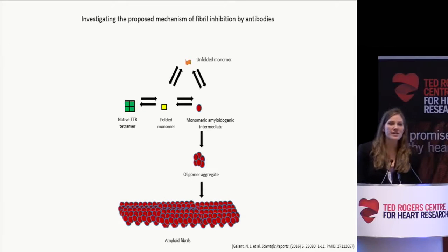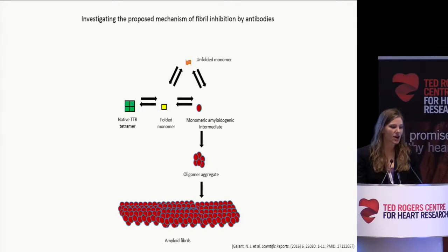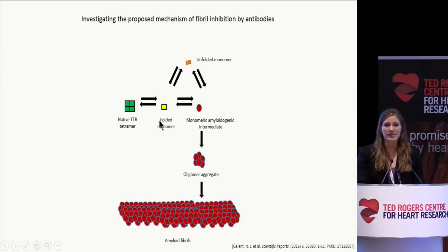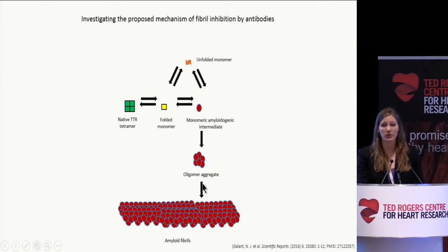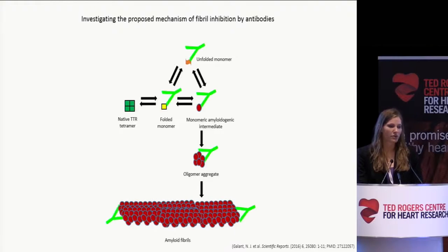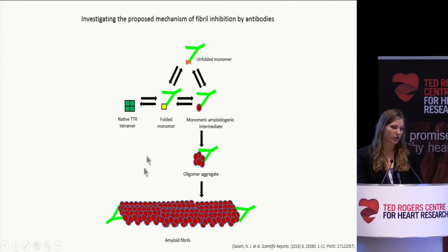How does transthyretin even form amyloid in the first place? TTR in its native tetrameric form can dissociate into monomers. These monomers can undergo aberrant changes and become amyloidogenic monomers, which can then become aggregates and eventually form amyloid fibrils. Here at the Chakrabarty Lab, we have developed an immunotherapeutic strategy in which we hope to use antibodies to specifically target these misfolding intermediates while leaving the native tetramer alone.